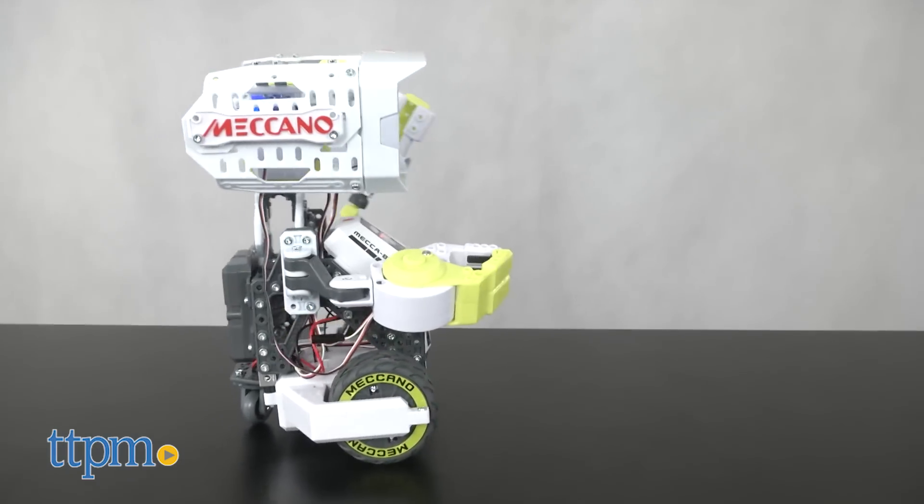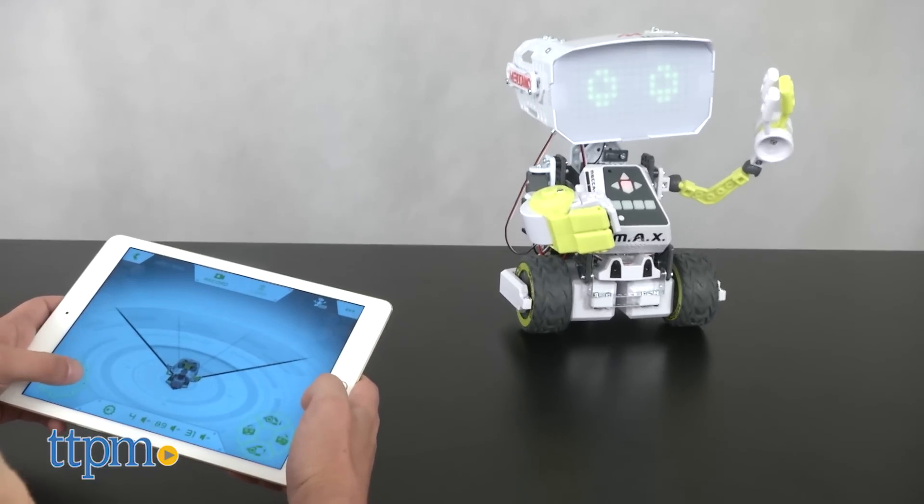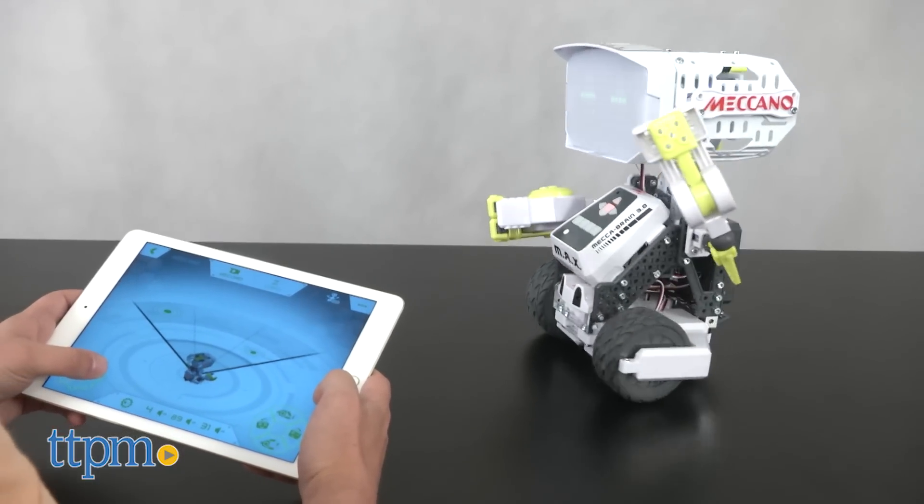Or A. He comes with built-in infrared sensors enabling him to move freely while avoiding obstacles. Through the app, it's easy to control his movement via a joystick.